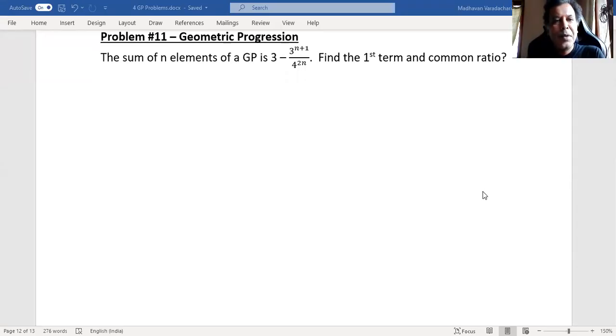Hello everyone, this is problem number 11 in geometric progression. The question is: the sum of n elements of a geometric progression is 3 minus 3 to the power of n plus 1 divided by 4 to the power of 2n. Find the first term and common ratio.